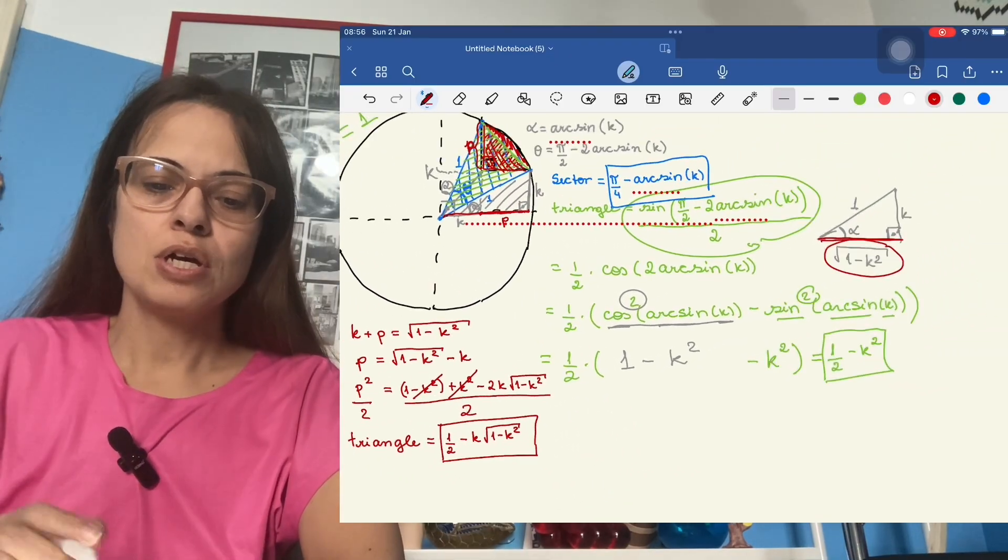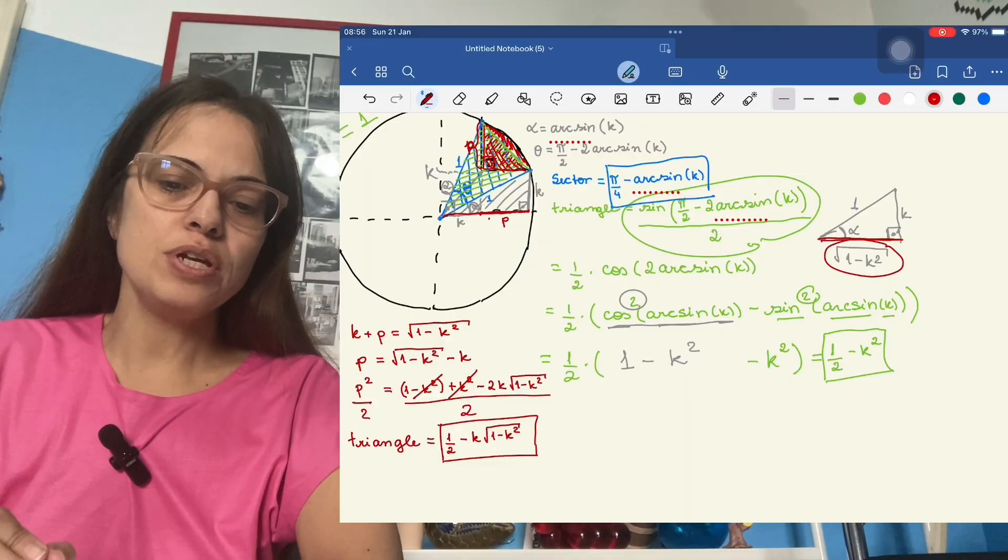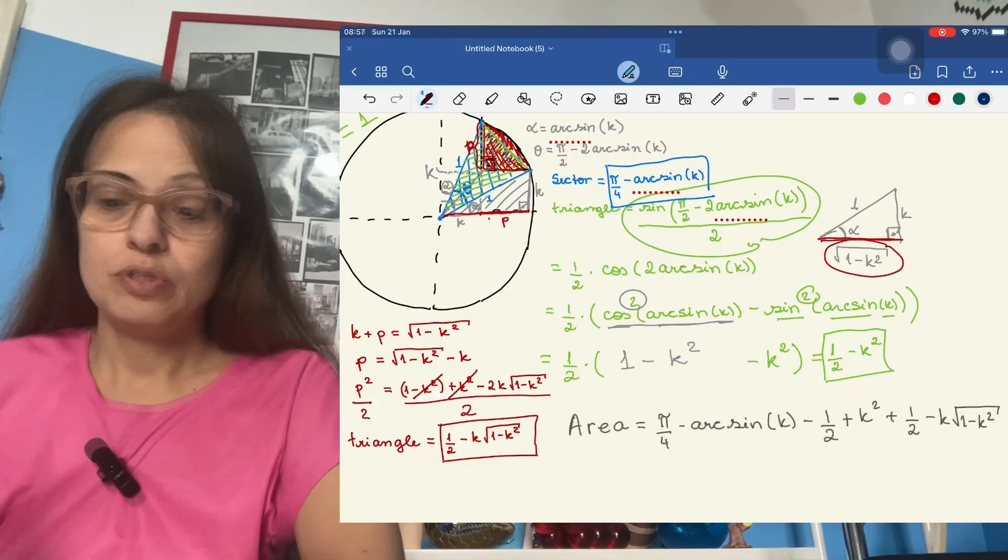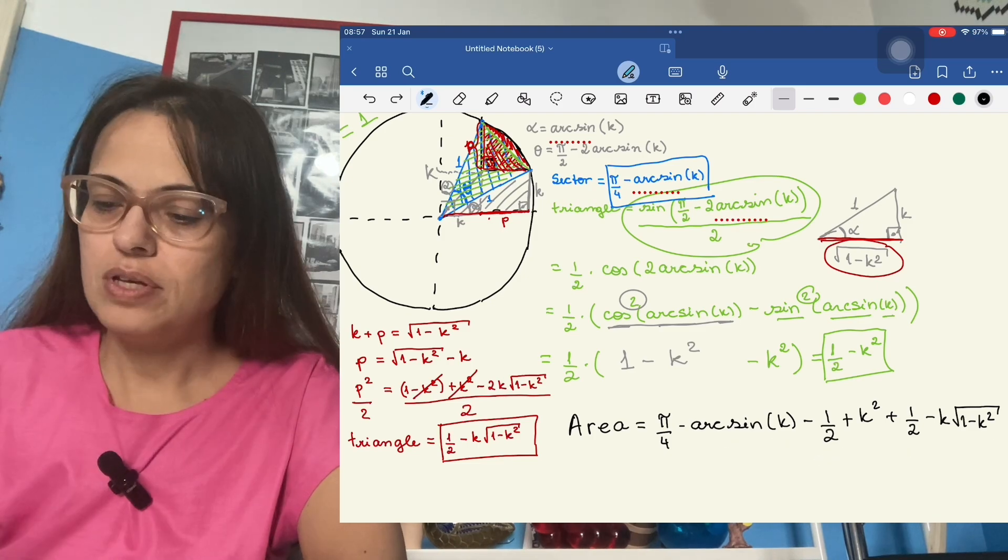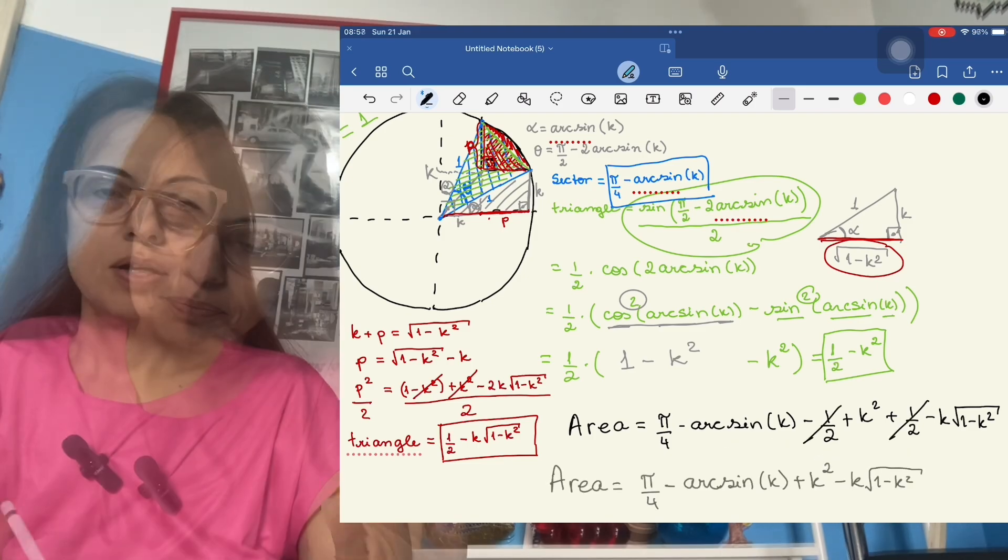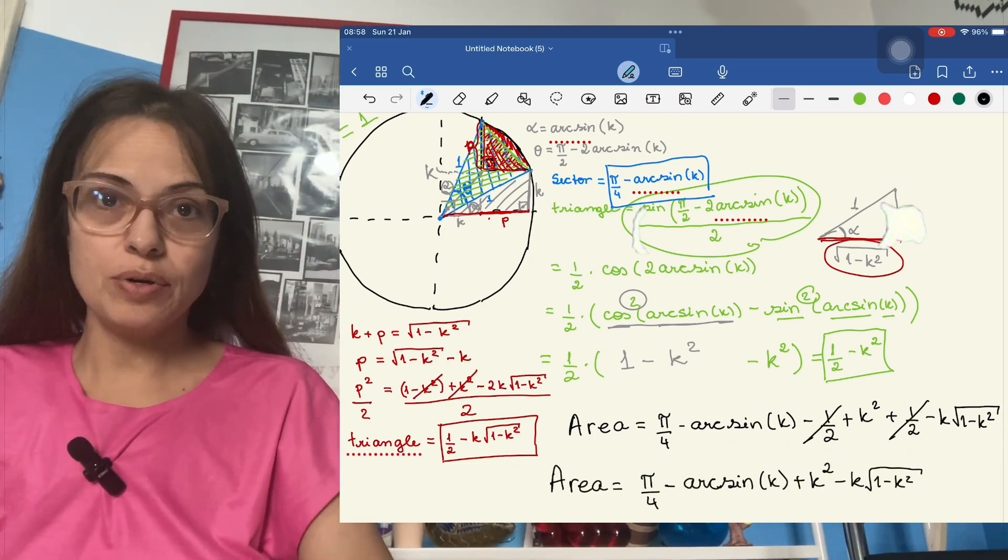Remember, the strategy was blue minus green plus red. So here it is. This is blue minus green plus red. And these halves cancel out. That is the whole answer to the area problem.